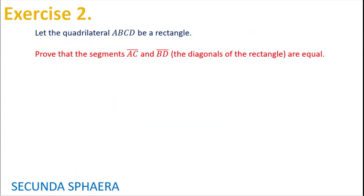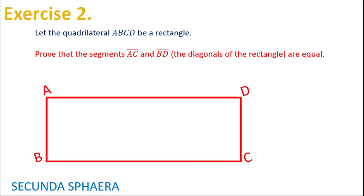Exercise number two: Let the quadrilateral ABCD be a rectangle. Here we have a rectangle, and we are asked to prove that the segments AC and BD, the diagonals of the rectangle, are equal.